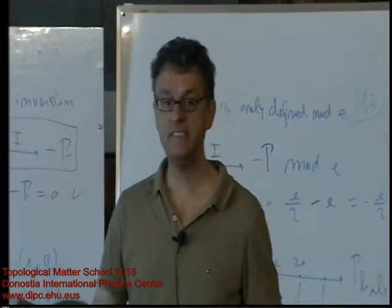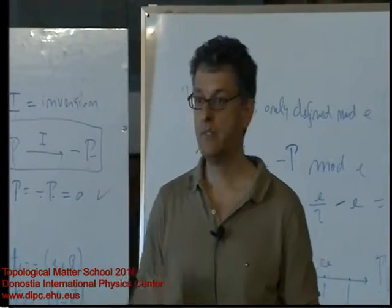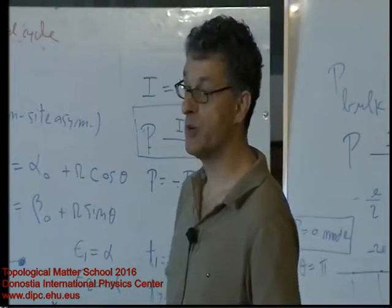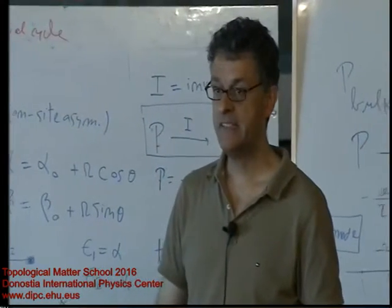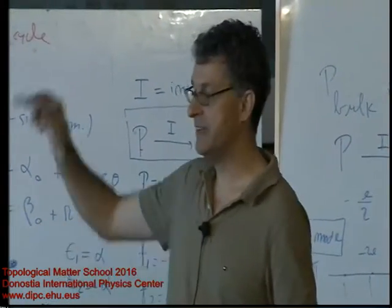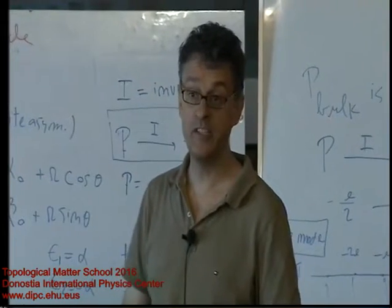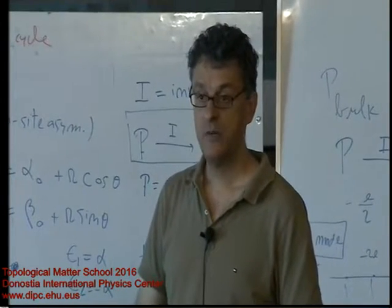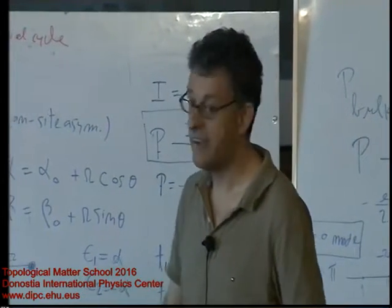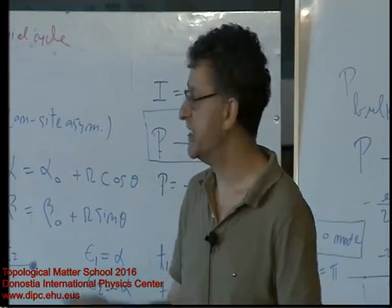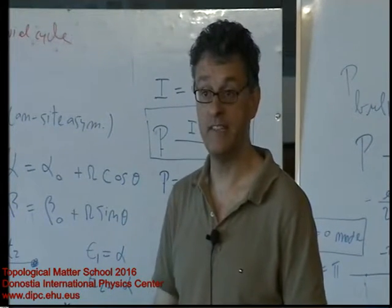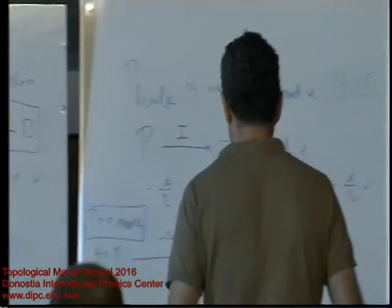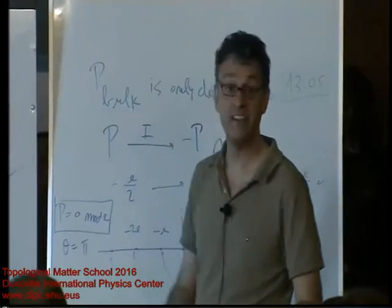So far we've been talking about the finite system, but we've argued that in some funny way, the polarization is a bulk property. That means that if we get rid of the edges by switching from open to periodic boundary conditions, as we like to do in condensed matter physics, we should still be able to define and calculate polarization and all these quantities we've been discussing. That's what I would like to do in the second half, and that's where Berry phases are going to appear.